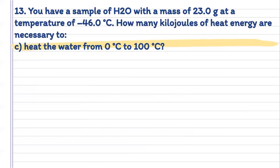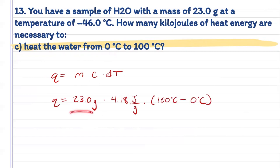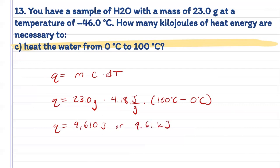Now we're going to heat that same sample of water from 0 degrees Celsius to 100 degrees Celsius. Now it went from being a solid to a liquid, so when we get our specific heat, we're not going to use the specific heat of solid water — we're going to use the specific heat of liquid water. We know our mass, we know our specific heat of liquid water, our final temperature is 100 degrees Celsius, and we're starting at 0 degrees Celsius. We get a heat of 9,610 joules, or 9.61 kilojoules.